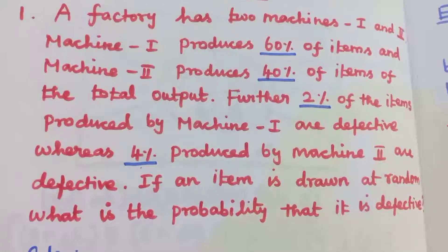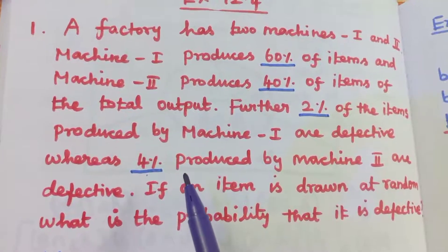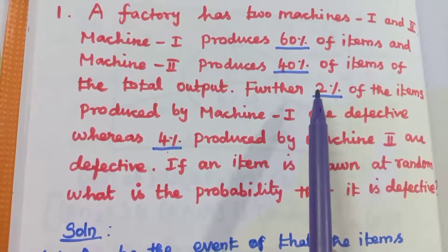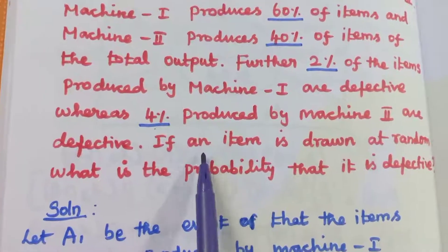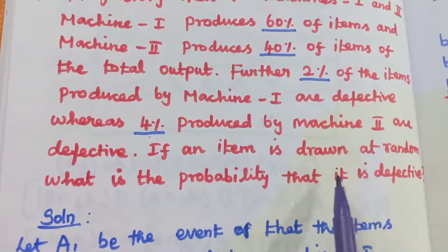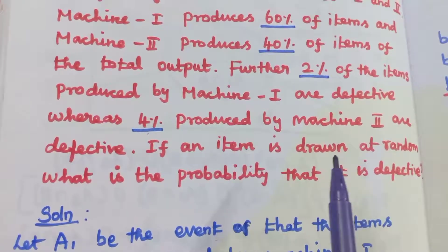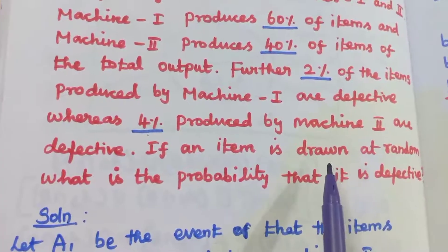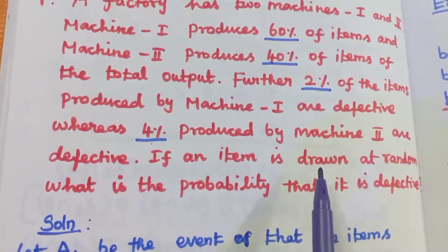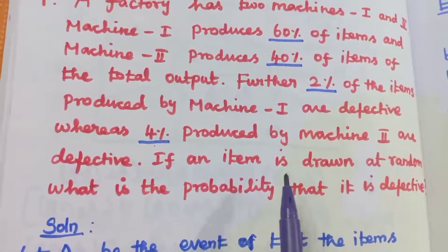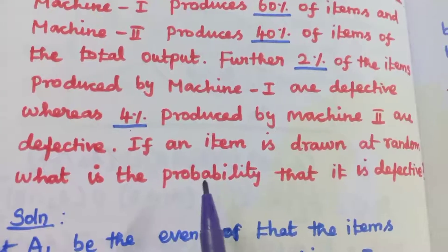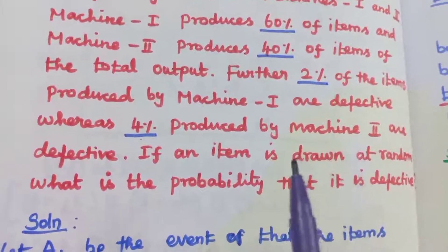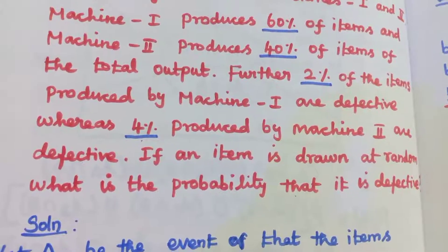So what is the use of Bayes theorem? This is exercise 12.4, first sample: machine 1 produces 60% and machine 2 produces 40% of the total output. 2% by machine 1 and 4% by machine 2 are defective items. If an item is drawn at random, what is the probability that it is defective, or that it is from machine 1 or machine 2? To find that, we apply Bayes theorem. You can go for the exercise problem. Thank you.